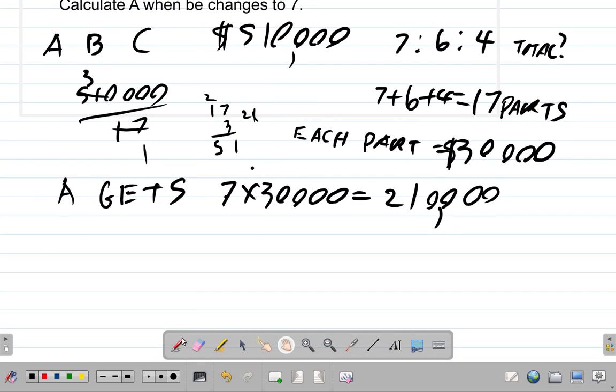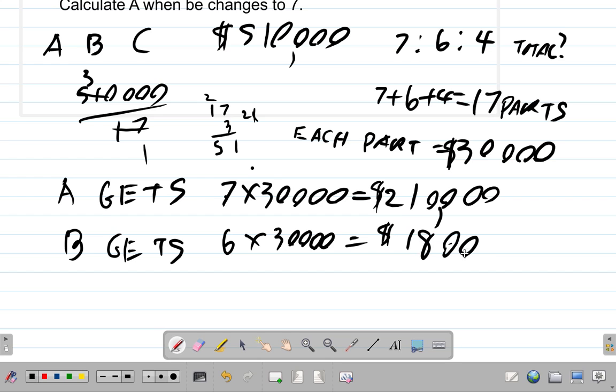How much would B get? B gets, that's a 6 part, 6 times 30,000 dollars. So that would be 6 threes, 18. So 180,000 dollars B would get. What about C?